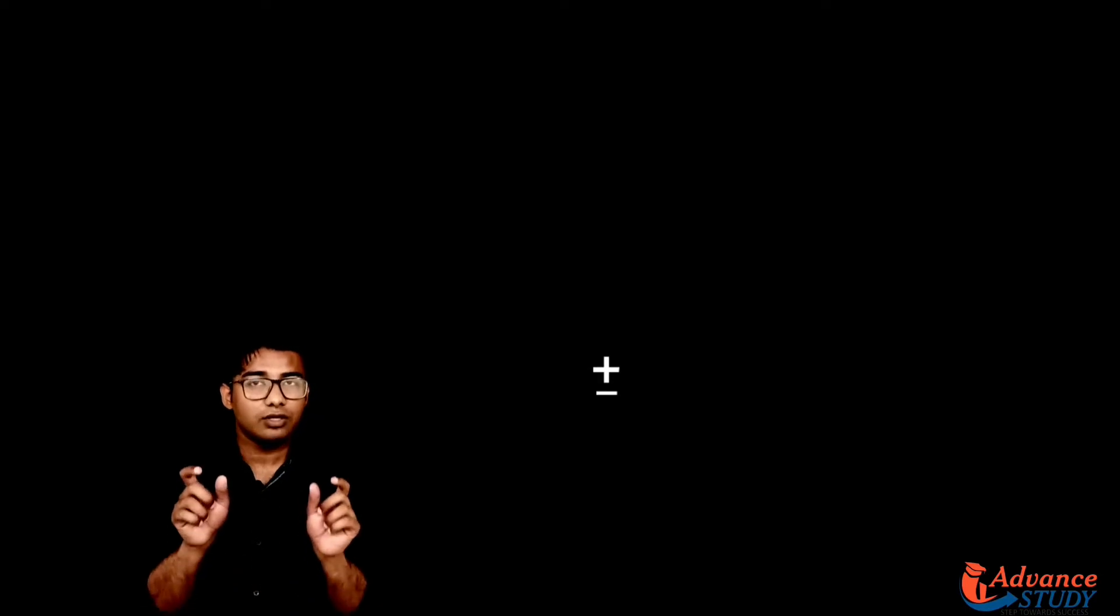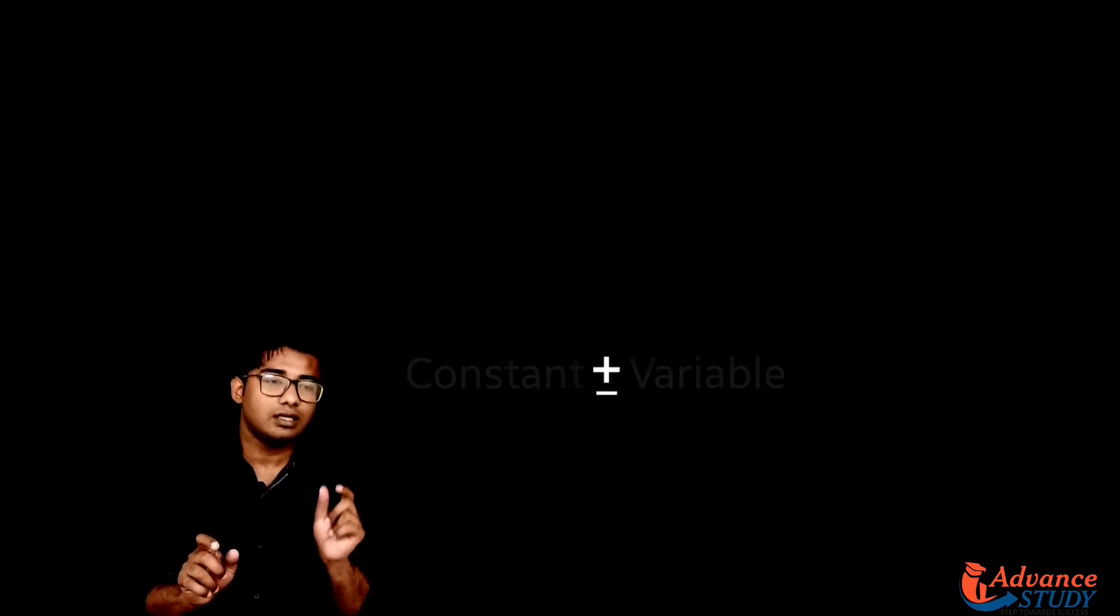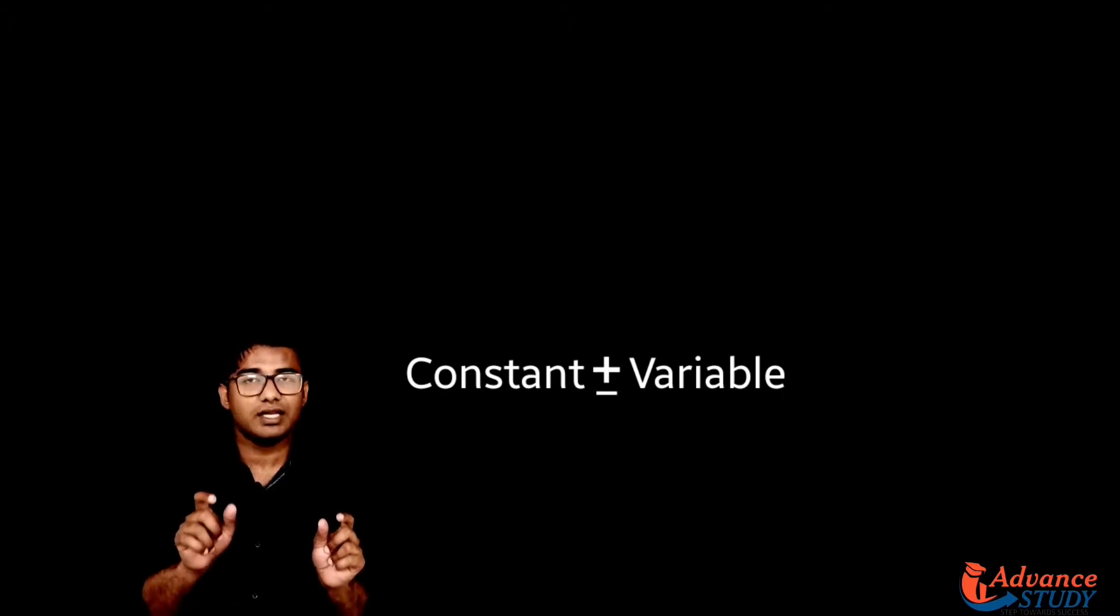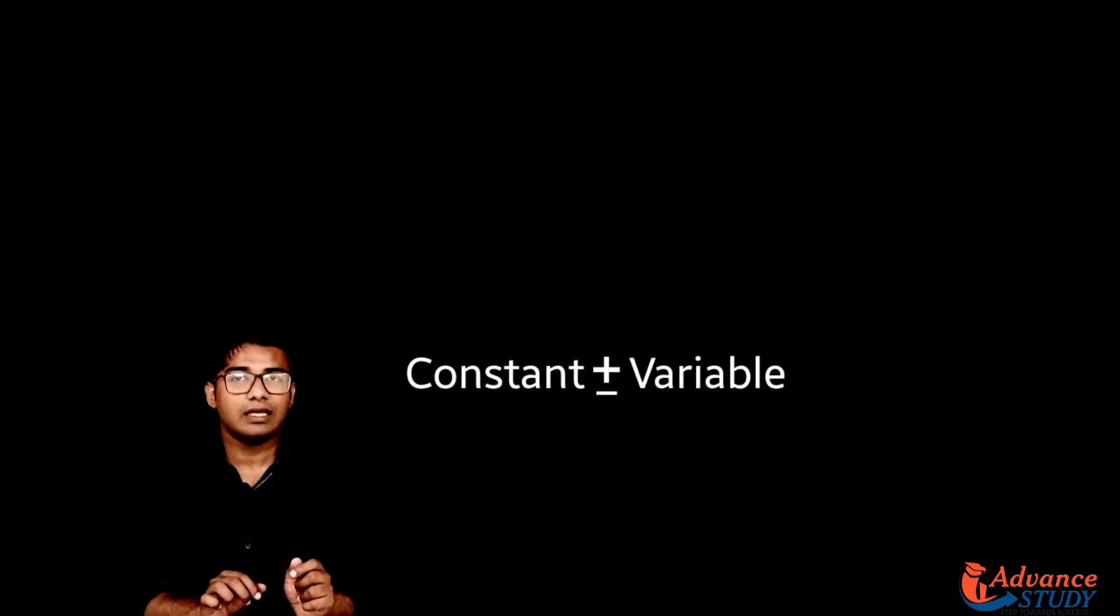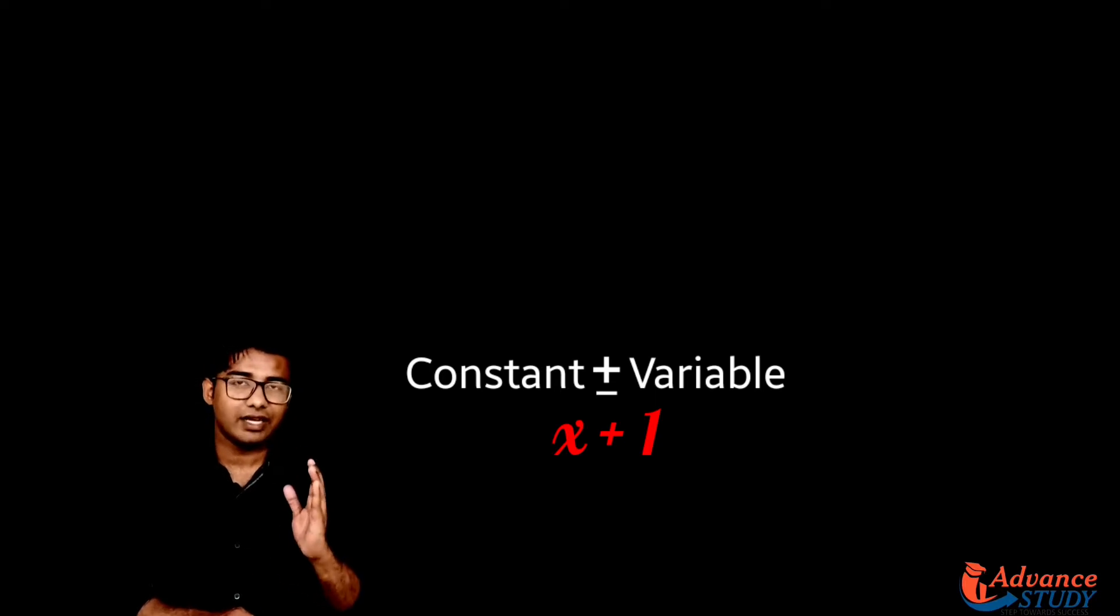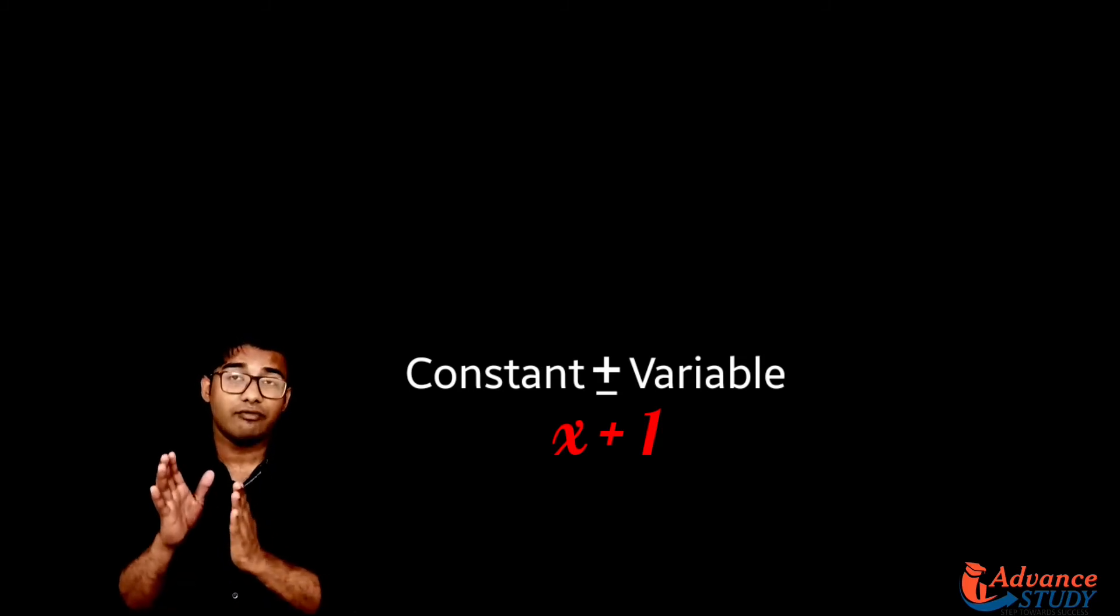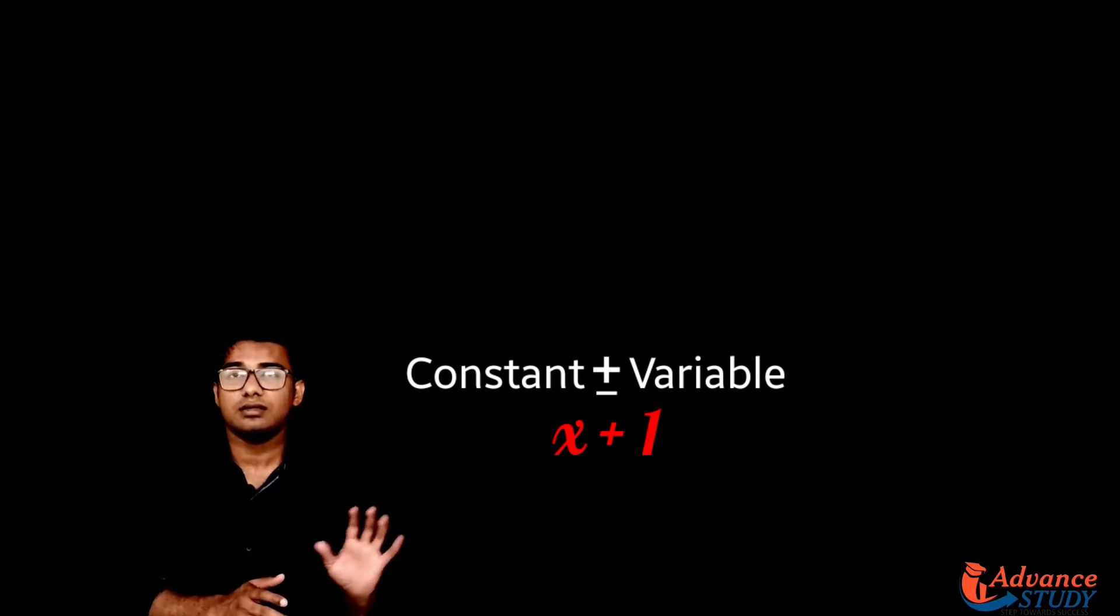What makes the term? When we have a plus sign or minus sign between two numbers, between a constant and a variable, then we can say it's a term. There are two terms. When I write x plus 1, x is a variable and 1 is a constant, because variables are a to z and constants are just real numbers.